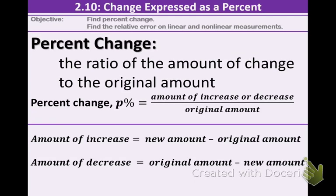In section 2.10, our goals are to find percent change and to find relative error. Percent change is the ratio of the amount of change to the original amount. Remember, ratio is just a fraction or comparison of two quantities. This formula is important, so write this down: percent change equals the amount of increase or decrease divided by the original.